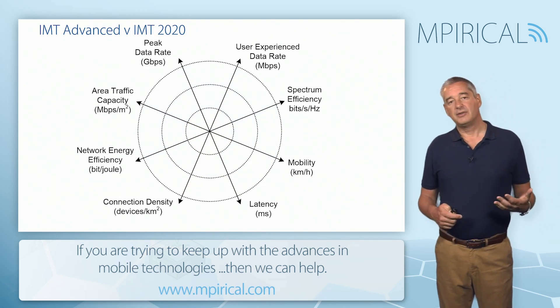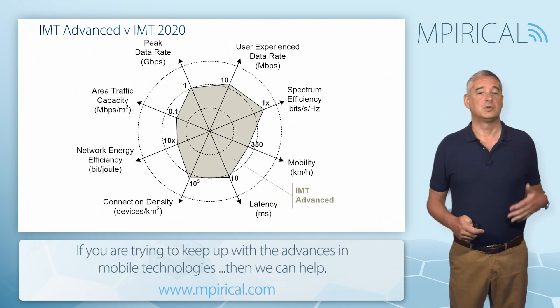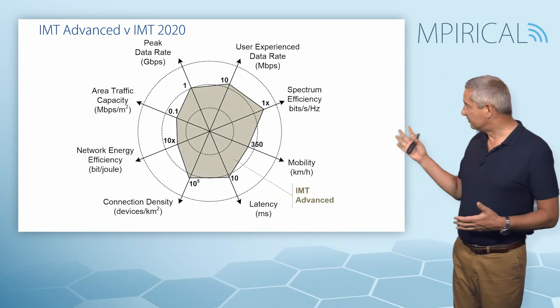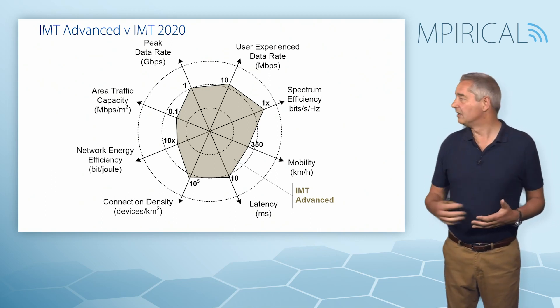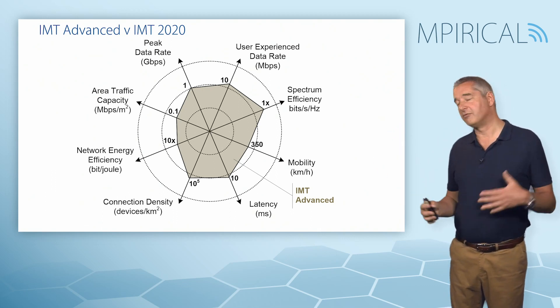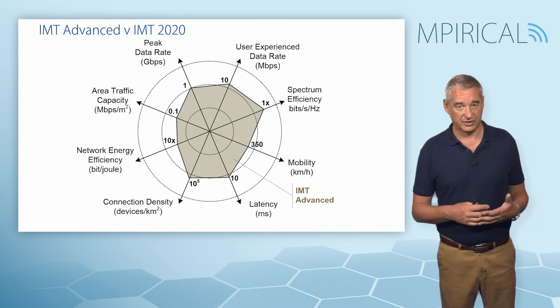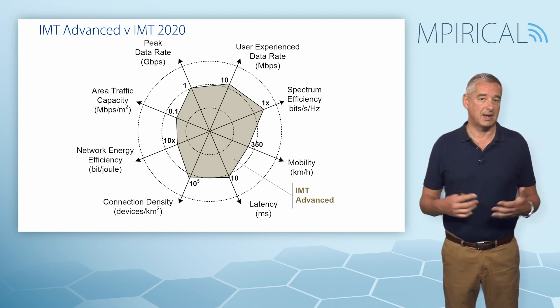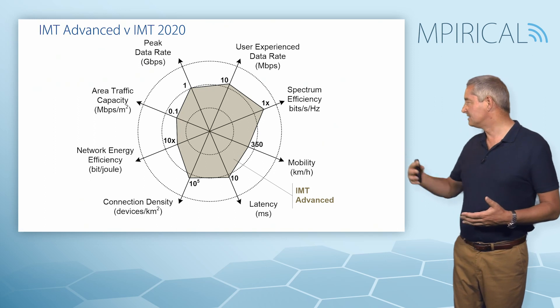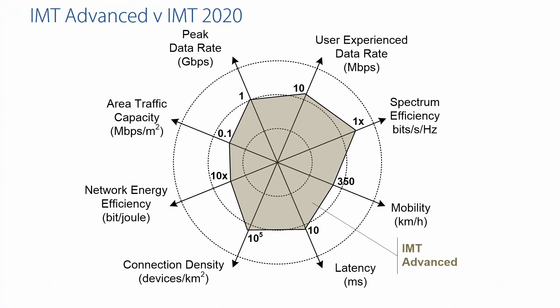Now looking at the comparison between IMT Advanced — our 4G system — we can see here some specific figures. For example, we have peak data rates of 1 gigabit per second on our 4G system, user experience data rates of 10 megabits per second, mobility at 350 kilometres per hour, and latency at 10 milliseconds.